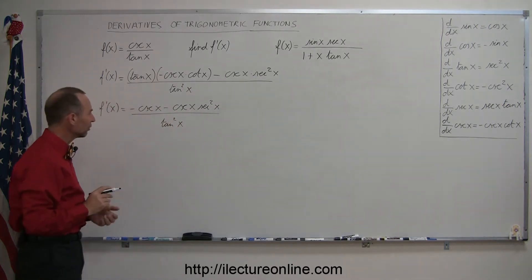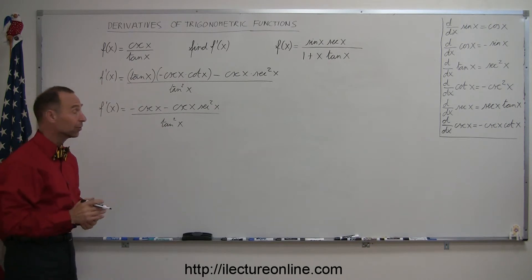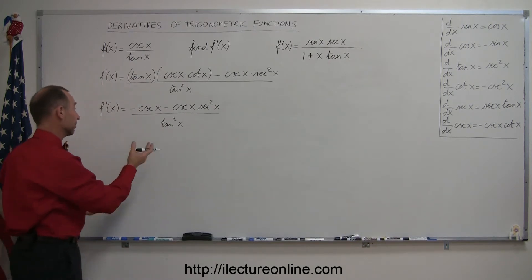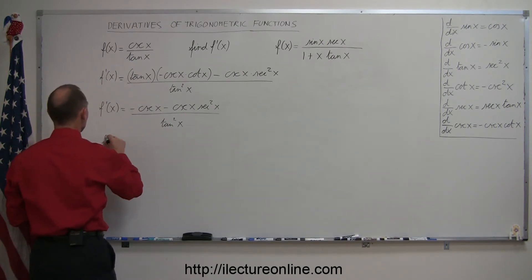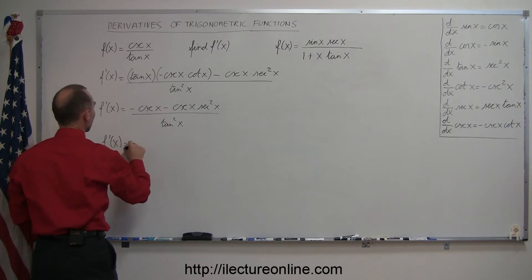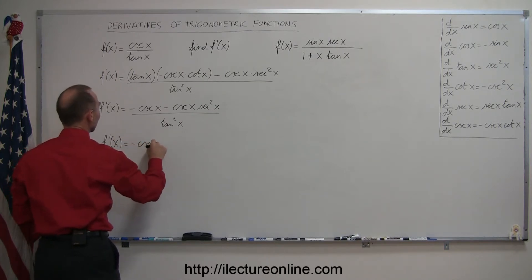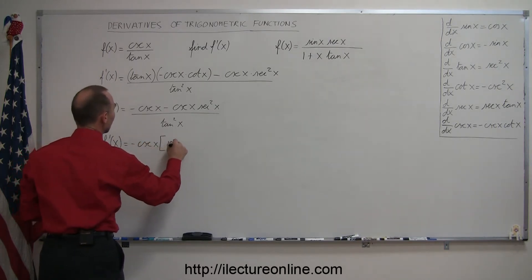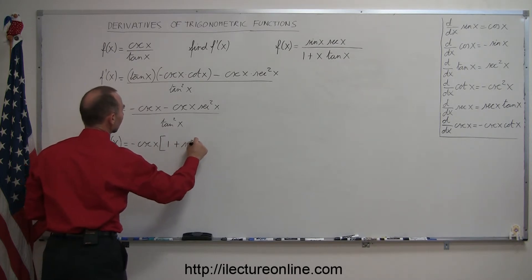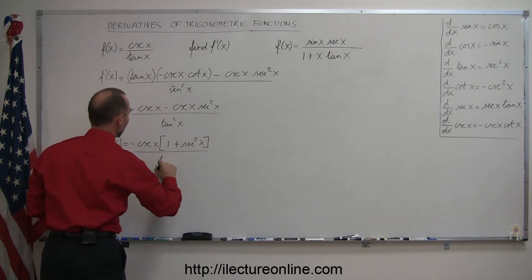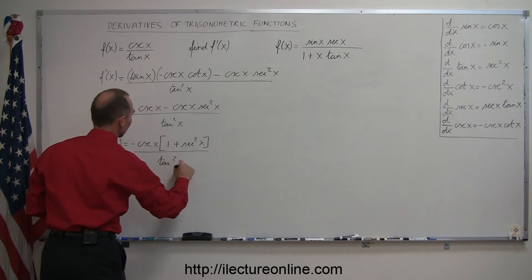All divided by tangent squared of x. Now notice that in the numerator, we can factor out a cosecant of x and take out the negative as well. So f prime of x is equal to minus cosecant of x times the quantity 1 plus secant squared of x, all divided by tangent squared of x.